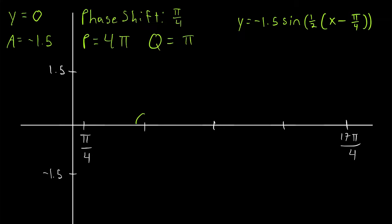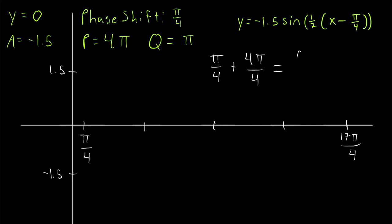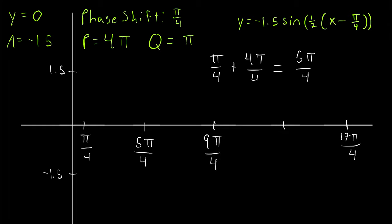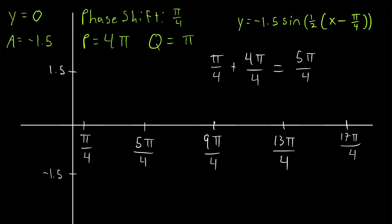Now do the calculations. The second key point's x-coordinate is pi over 4 plus pi — writing pi as 4 pi over 4 — giving 5 pi over 4. Each subsequent key point increases by another quarter period of 4 pi over 4, so we get 9 pi over 4, then 13 pi over 4. As a check: 13 pi over 4 plus 4 pi over 4 equals 17 pi over 4, confirming we reach the end of the period correctly.